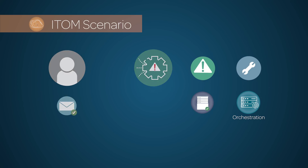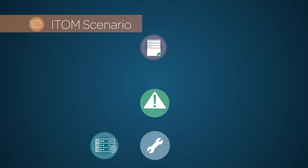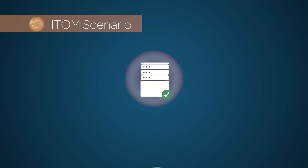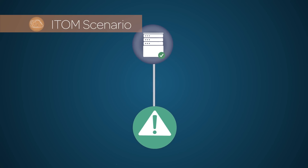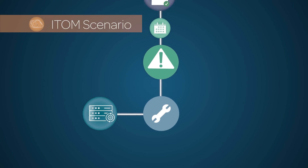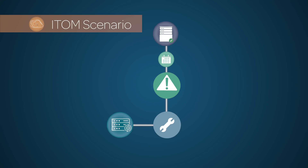In this scenario, we again see the email server as the Hardware Server CI. Event management creates an alert that generates an incident record tied to the CI that produced the event. The change is created from the incident record, which targets the same CI on the form, and orchestration performs a series of actions to restore the email service.